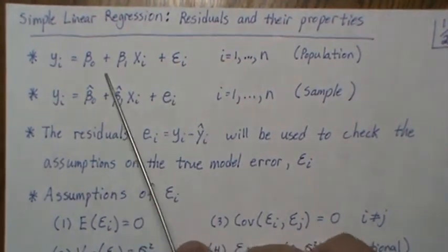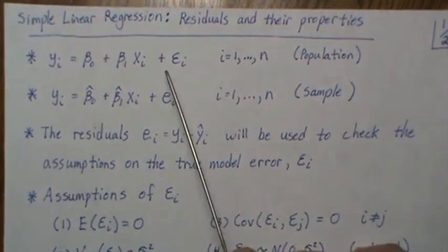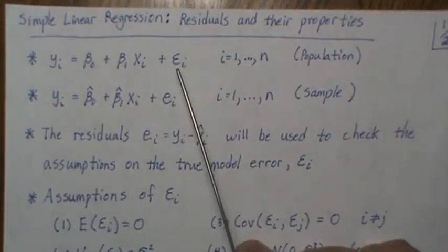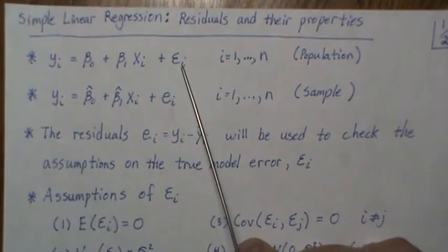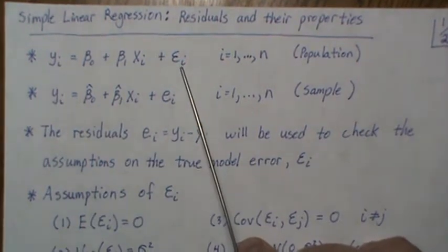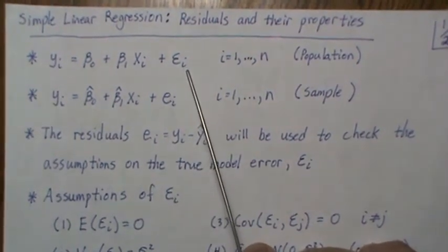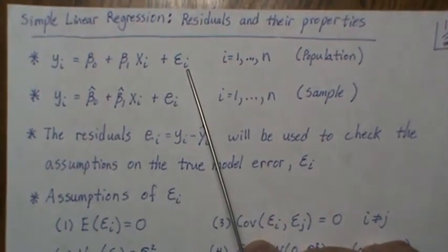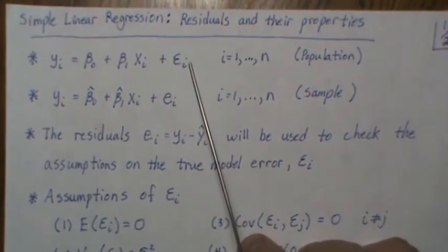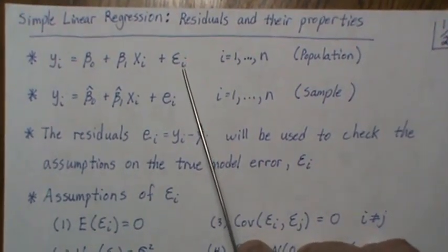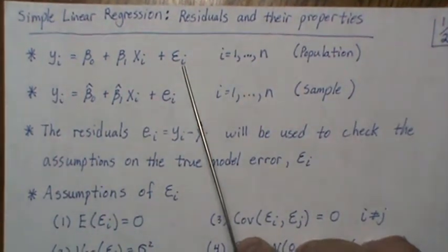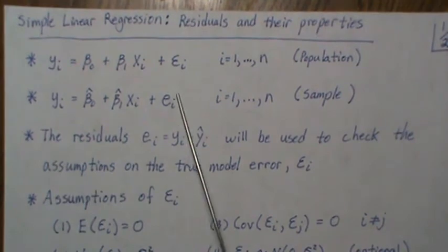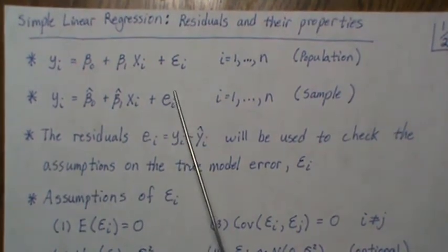Why do we want to study the residual? All the assumptions on this model are on the error term. The standard assumptions are that it's mean zero, constant variance σ², the error terms have covariance zero, and optionally that errors are normally distributed — IID mean zero, constant variance.